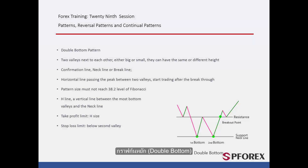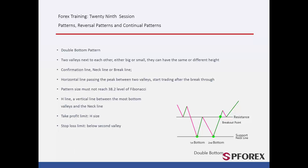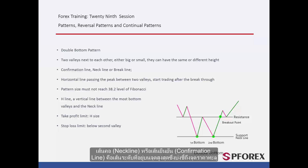Double Bottom Pattern: On a downward trend, a double bottom pattern is formed by two consecutive valleys with different or the same height and width. The neckline, or confirmation line, is a level line on the peak point, which indicates the breakout point.